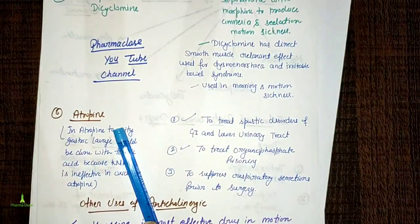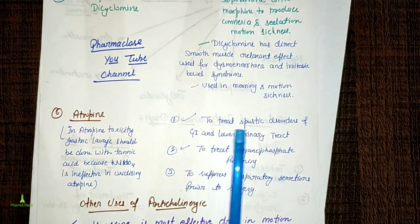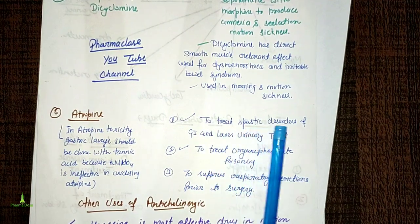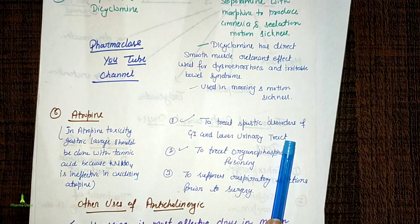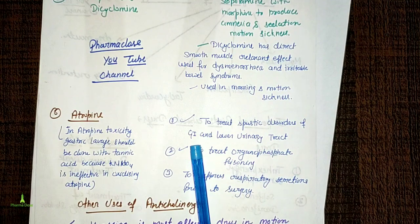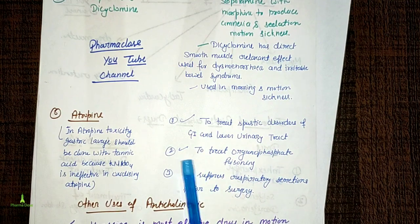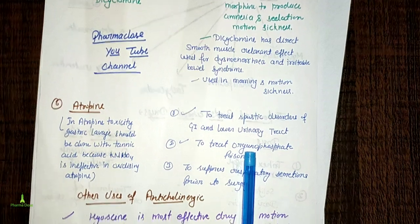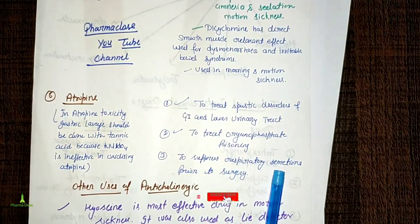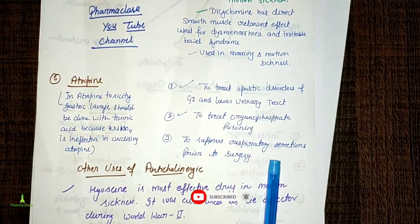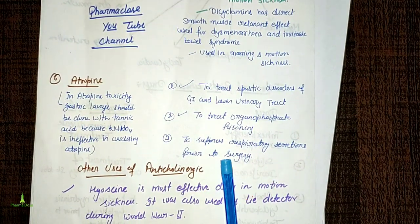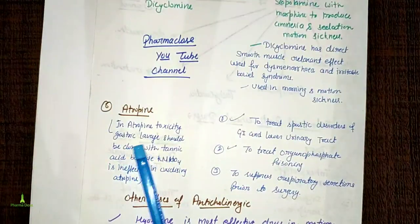Atropine is also used to treat spastic disorders of the GIT and lower urinary tract. In lower UTI infections we use atropine for urinary tract spasms and GIT antispasmodic use. In organophosphate poisoning, atropine is used. It is also used to suppress respiratory secretion, salivation, and bronchial secretion before surgical procedures.